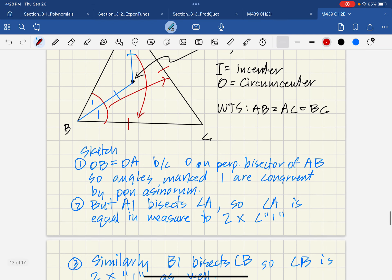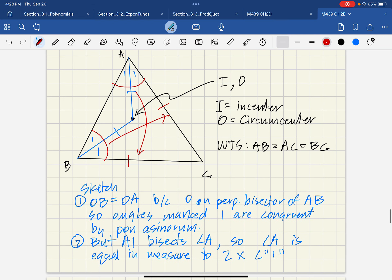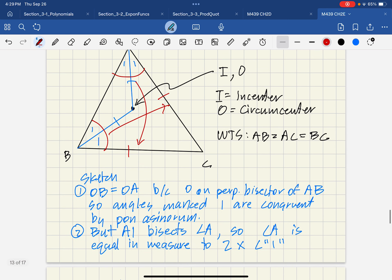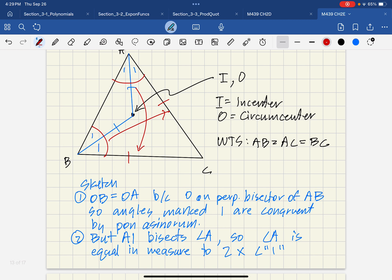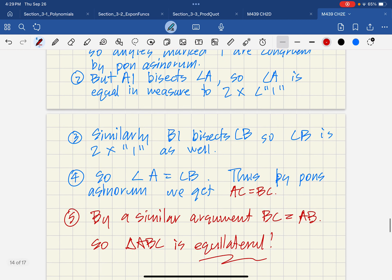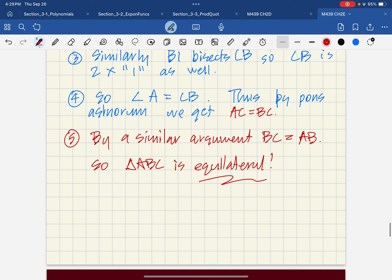It's, again, a sketch, but I guess the idea is that if both of these are, if the point at the center is both incenter and circumcenter, we have a lot to work with. It's the point that both bisects interior angles and is equidistant from each of the vertices. So we can twice apply Pons Asinorum to get that two angles are the same, A and B, and that implies that two sides are the same and just repeat the argument for the other side.